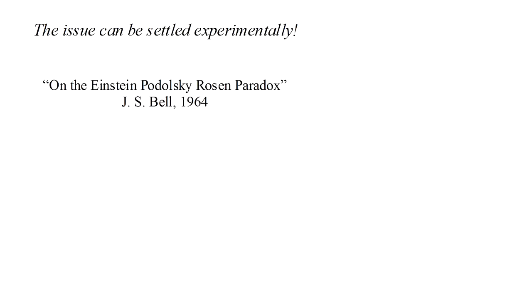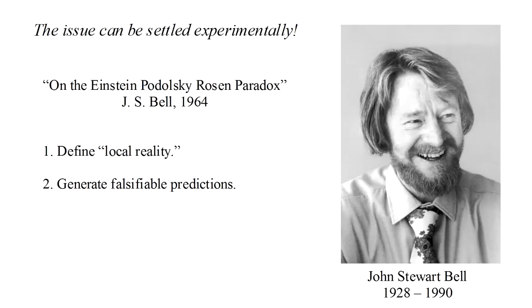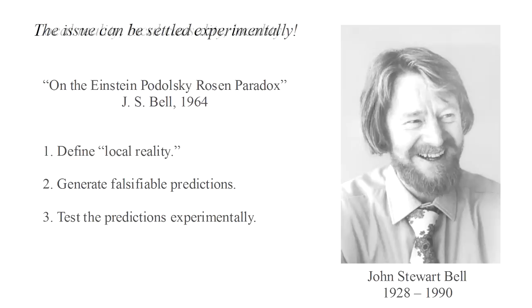But it turns out that the debate can be settled experimentally. In 1964, a paper appeared titled, On the Einstein-Podolsky-Rosen paradox, written by John Bell. We're going to follow a simple version of Bell's argument in which we'll, one, define local reality, two, generate falsifiable predictions based on that definition, and three, test the predictions experimentally.